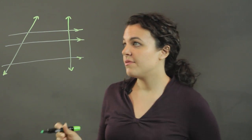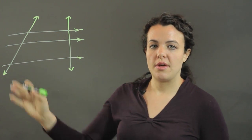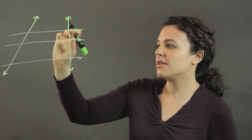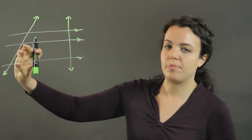Now, if you have two transversals that are intersected by three parallel lines, they are then cut into proportional parts.